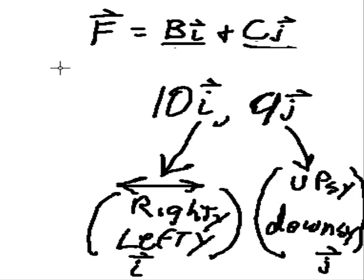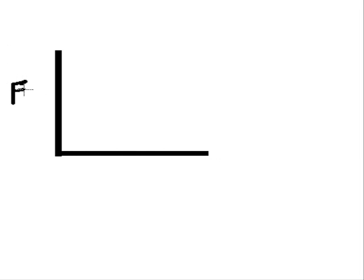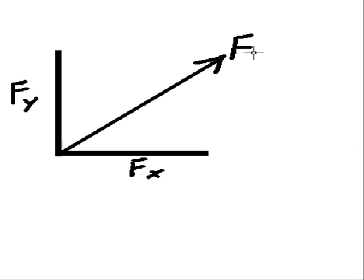So, if you were to rewrite this using the standard notation we've been using till now, it would go something like this. Here's your Fy. Here would be your Fx. And, let's say this is your resultant F. And, so you could say that Fx, and let's say this is alpha, angle alpha.